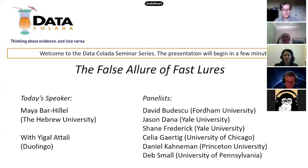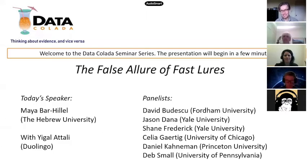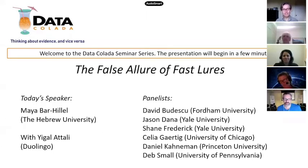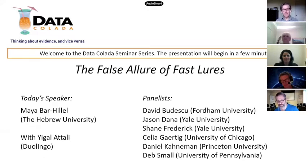Good morning, everyone. Thanks a lot for coming to the Data Collada seminar series. I'm very pleased to introduce today's speaker, Maya Bar-Halal, who's going to be talking about the false lure of fast lures and her joint work with Igal Itali. We also have a very distinguished set of panelists today: David Badescu, Jason Dana, Shane Frederick, Celia Gertig, Danny Kahneman, Deb Small, Joe Simmons, Yuri Simonson, and myself.